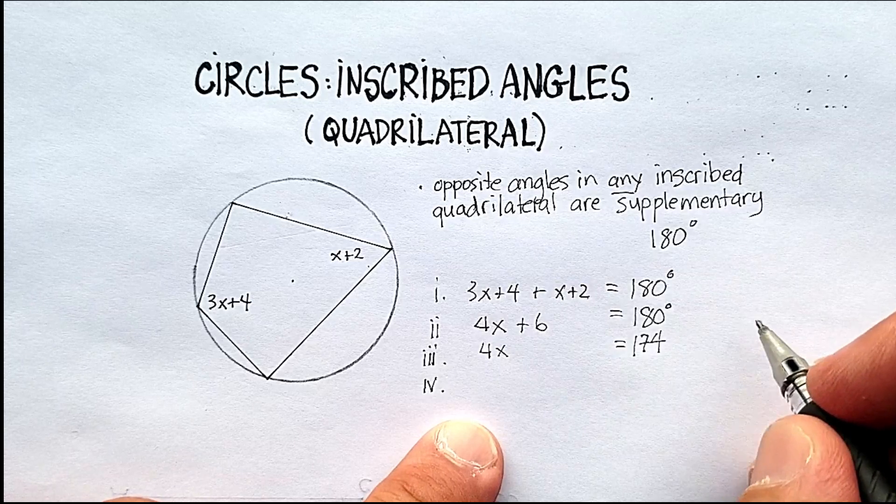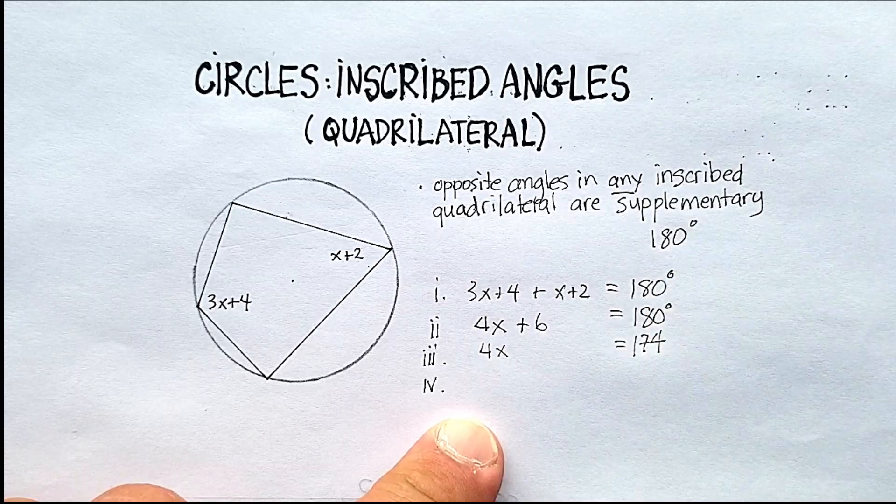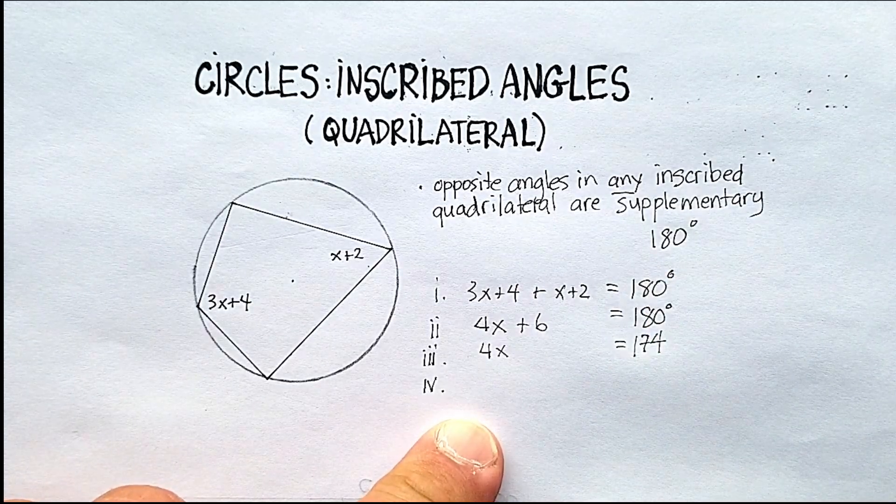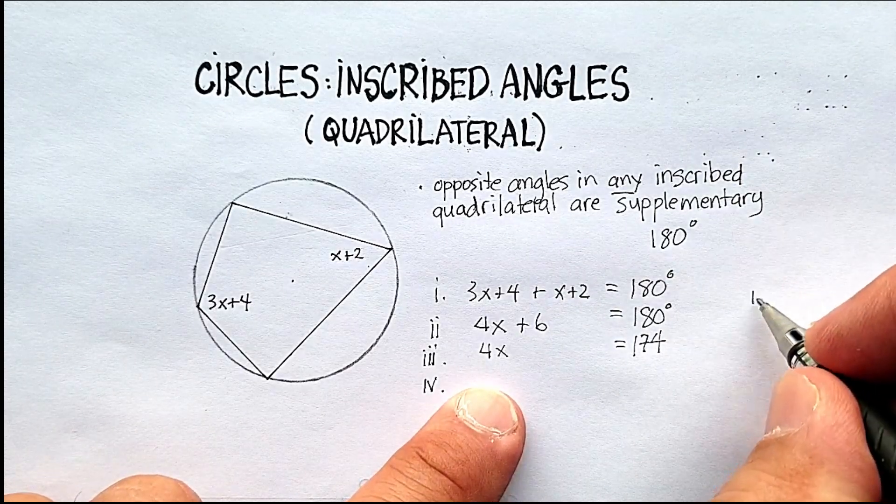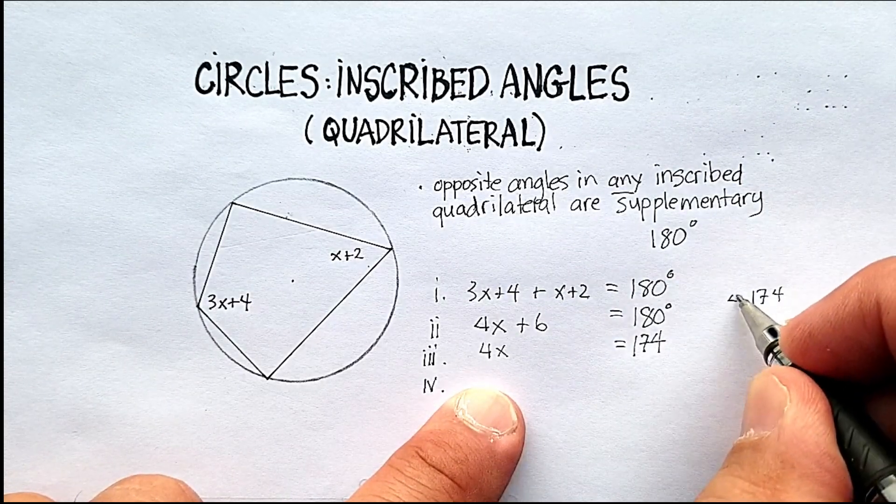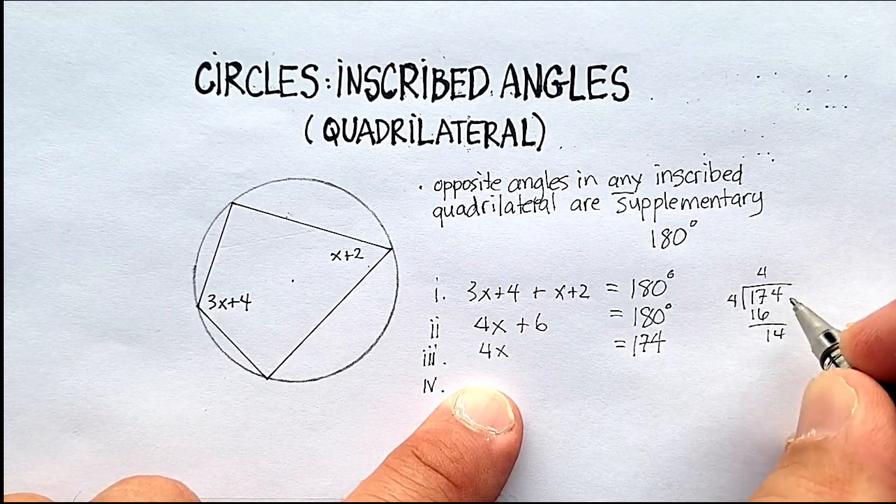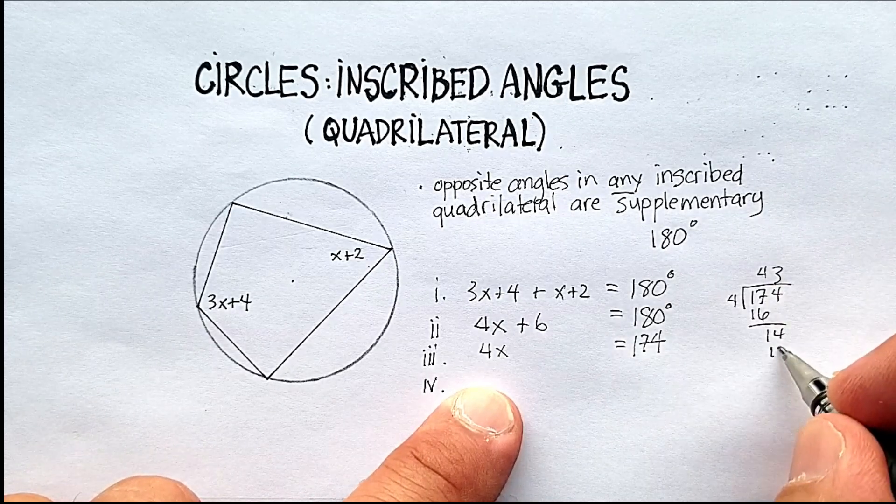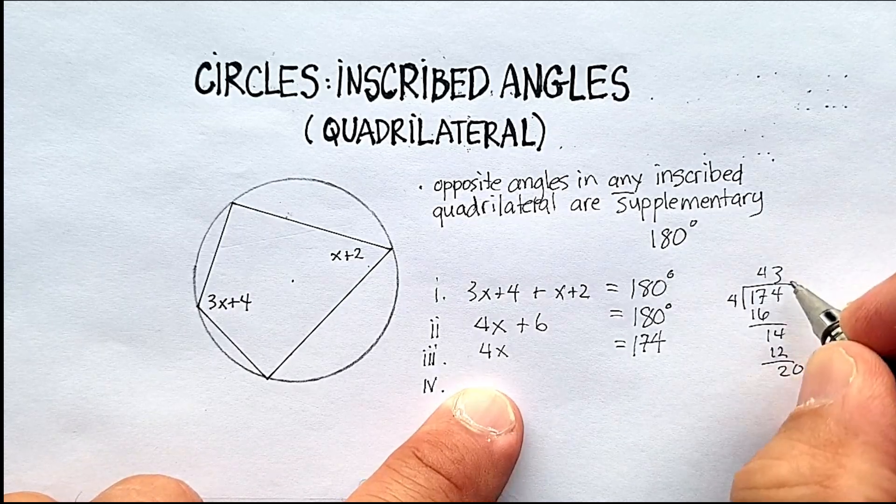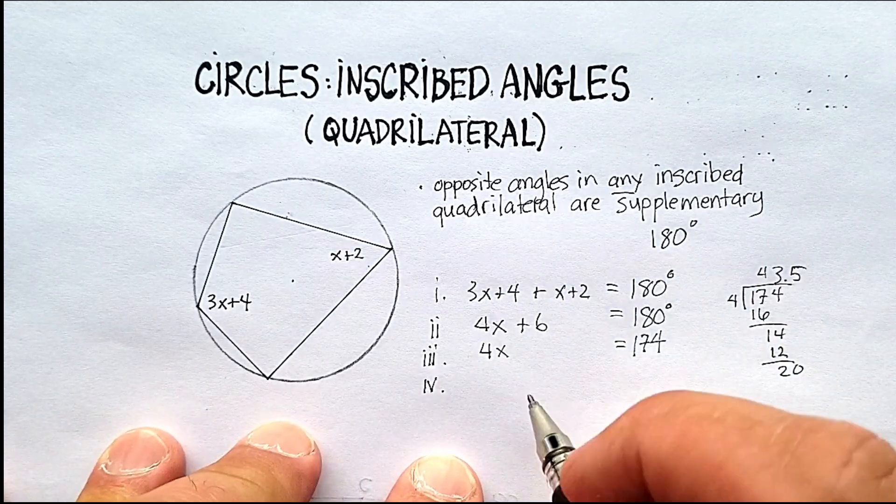Let me just do that real quick. 174 divided by 4, 16, 14. So x is going to be 43.5.